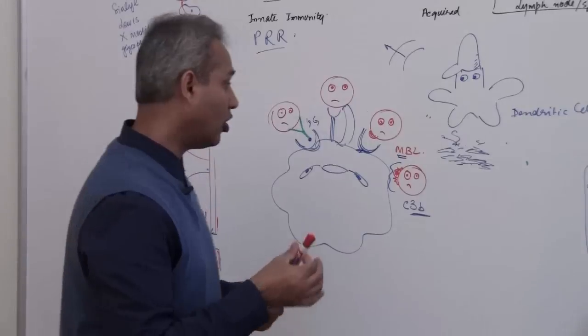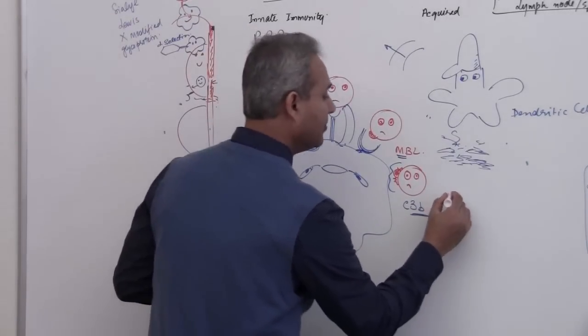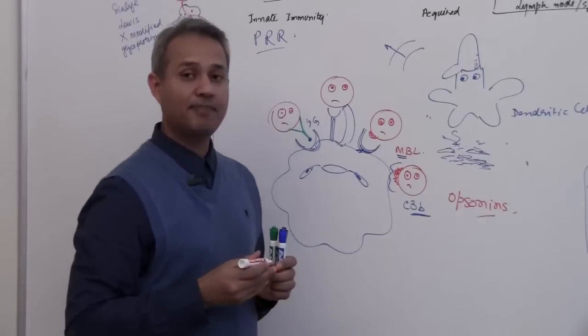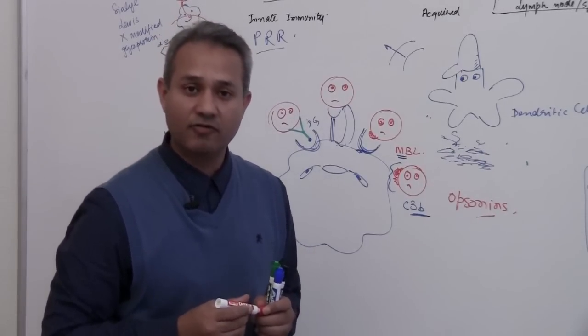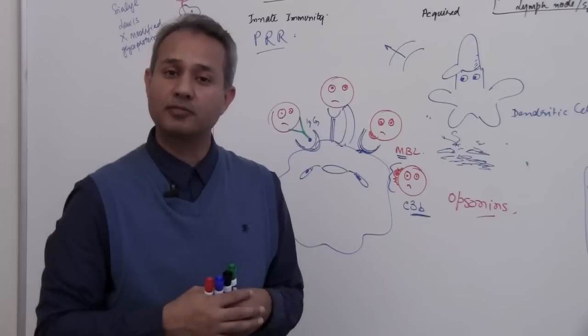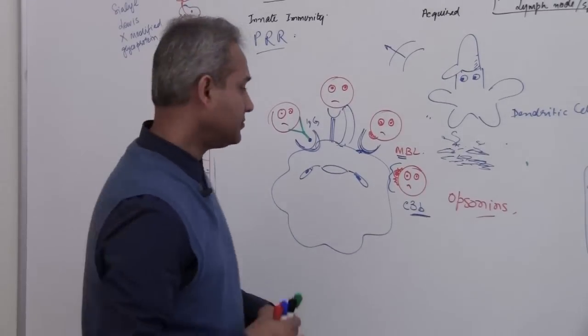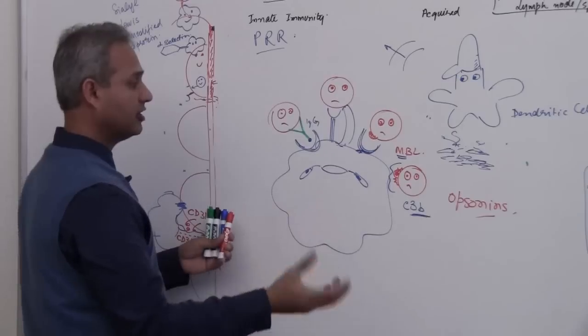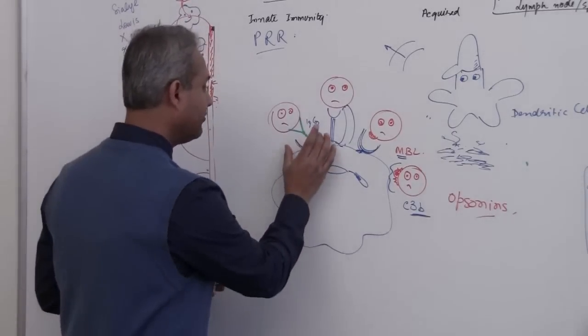What does that mean? Why are they called opsonins? Because they make the pathogen delicious for neutrophil and macrophages to eat them. They sugar coat them literally, they coat them with fun delicious things and the neutrophil and macrophages both have receptors.